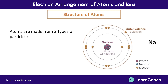Hopefully you remember in the last video we looked at the structure of atoms, where we saw that atoms are made from three types of particles: protons, neutrons and electrons. We saw that the sodium atom, as with all atoms, has a central nucleus which contains the protons and the neutrons, and has the outer rings or shells that contain the electrons. We also looked at the fact that the outermost ring or shell is called the valence shell, and the electrons that sit in that shell are called the valence electrons.